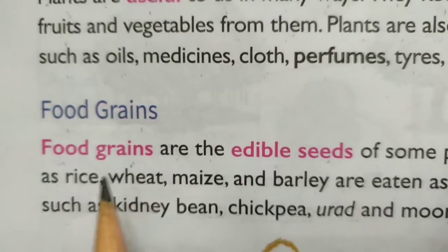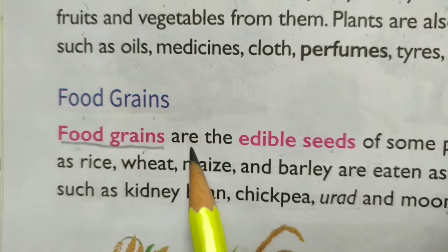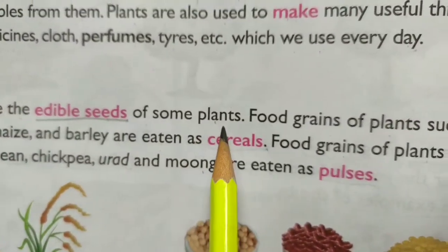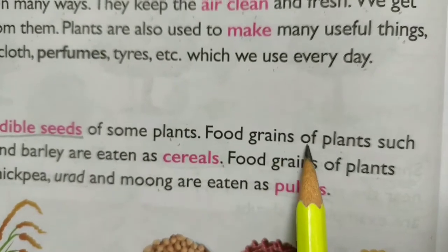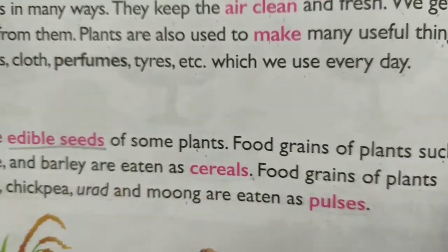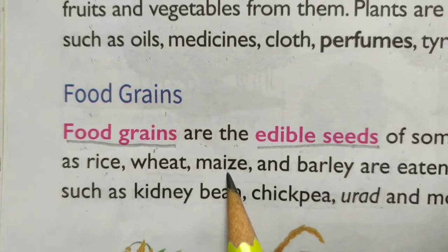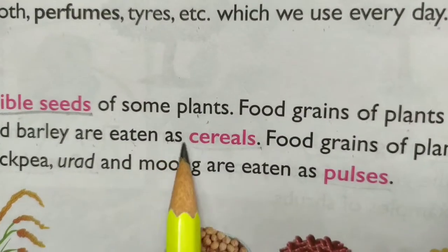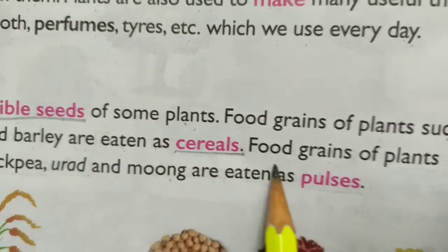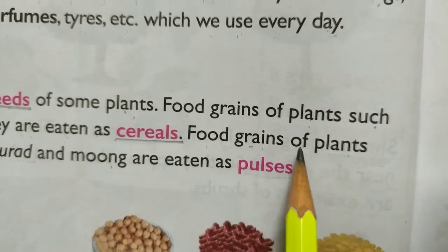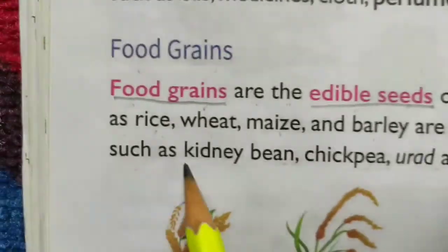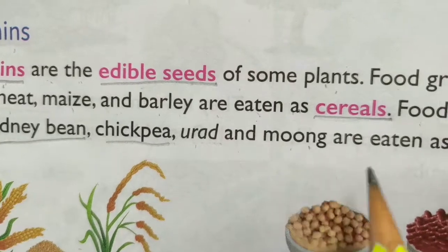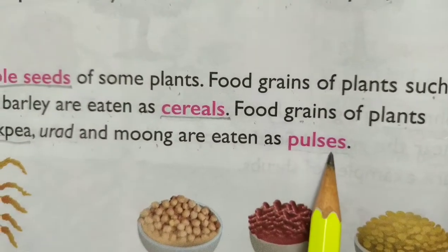Food grains are the edible seeds of some plants. Food grains of plants such as rice, wheat, maize and barley are eaten as cereals. Chickpeas, kidney beans, urad and moong are eaten as pulses.